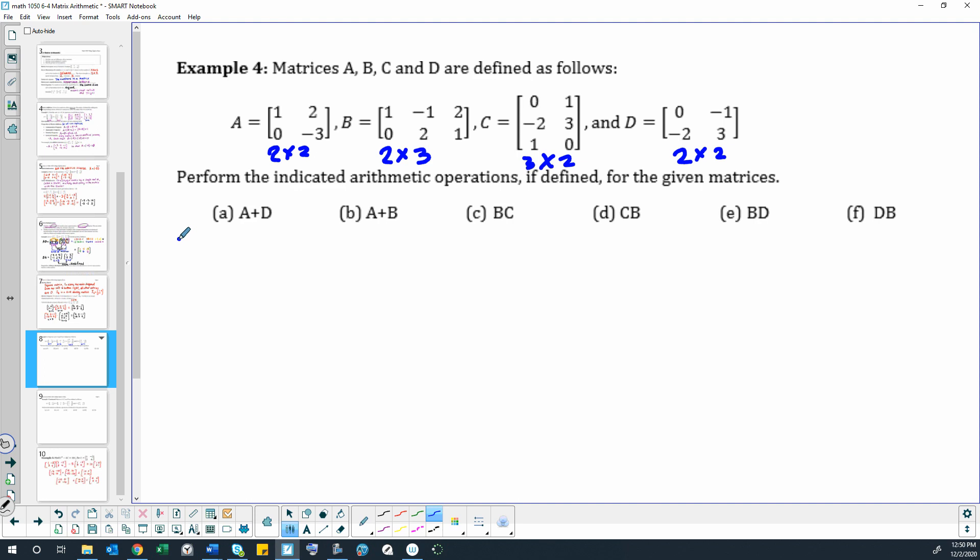Okay, so A plus D. That would be just taking our matrix A, which is 1, 2, 0, negative 3, and adding matrix D to that, which is 0, negative 1, negative 2, 3. And when we add corresponding numbers, we get 1 plus 0 is 1, and 2 minus 1 is 1, and 0 minus 2 is negative 2, and negative 3 plus 3 is 0. So there is the answer to part A.